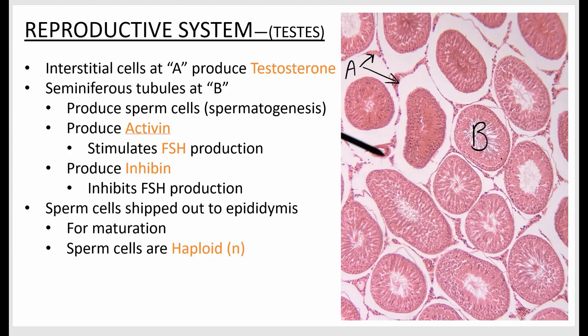Let's look at a close-up of the testes. The round structures visible in the image are the seminiferous tubules — that's where sperm cells are made. The interstitial cells, found between the tubules, produce testosterone. Once sperm cells are made in the lumens of the seminiferous tubules, a tail is added and they're shipped off to the epididymis, where they're made motile and a couple of finishing steps are completed.